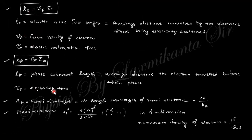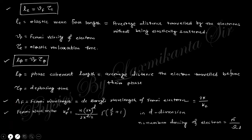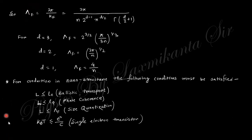There are some key relations: L_e equals v_F times tau_e, where v_F is the Fermi velocity of the electron, L_e is the elastic mean free path — the average distance traveled by electrons without elastic scattering — and tau_e is the elastic relaxation time. Similarly, the phase coherence length is defined, and lambda_F is the Fermi wavelength. These are the characteristic length scales for nanostructure conduction.